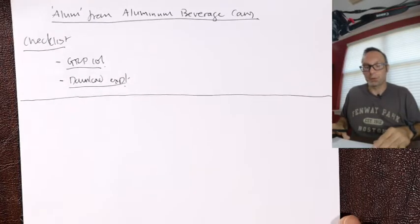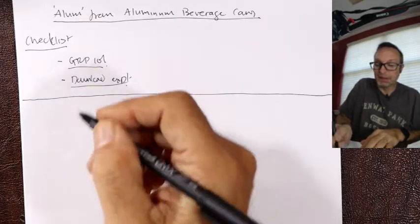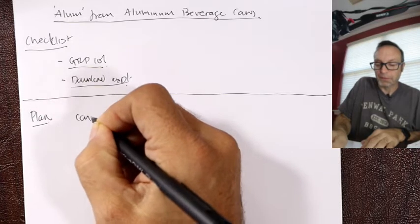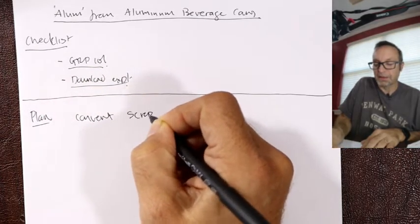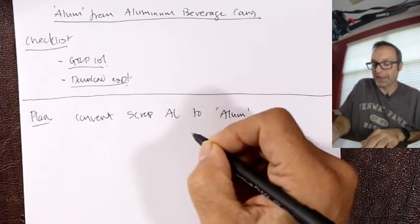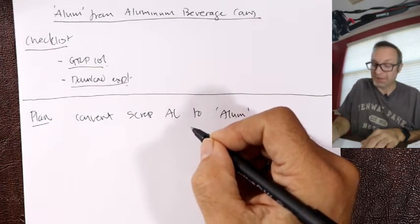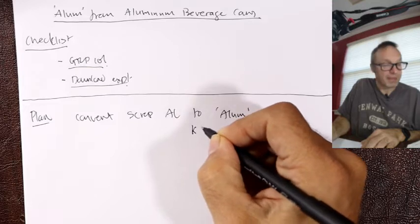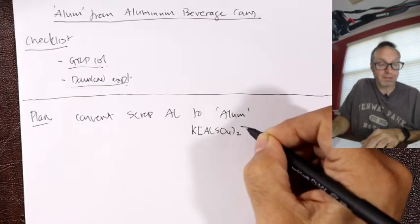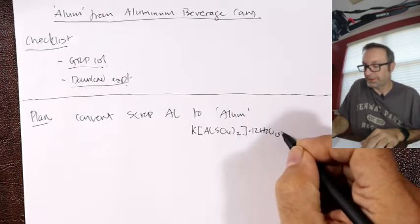So first things first, the plan: convert scrap aluminum to alum. Alum is potassium aluminum sulfate dodecahydrate, K[Al(SO4)2]·12H2O. Be careful with this - this is alum.